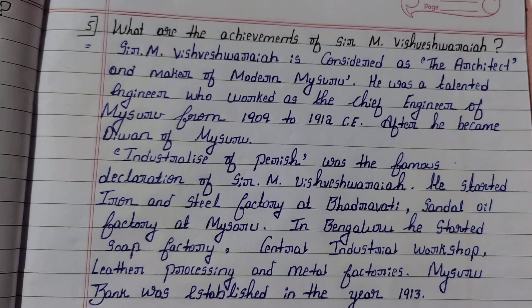Fifth question: What are the achievements of Sir M. Vishweshwarya? Answer: Sir M. Vishweshwarya is considered the architect and maker of modern Mysore. He was a talented engineer who worked as Chief Engineer of Mysore from 1909 to 1912. He became the Dewan of Mysore. Industrialization of Mysore was his famous declaration. He started an iron and steel factory at Bhadravati, a Sandal Oil Factory, and in Bengaluru he started a soap factory, central industrial workshop, and leather processing and metal factories. Mysore Bank was established in the year 1913.